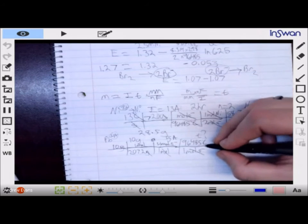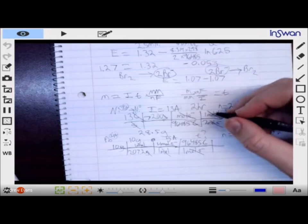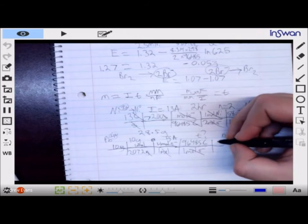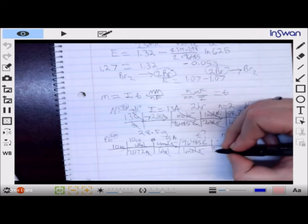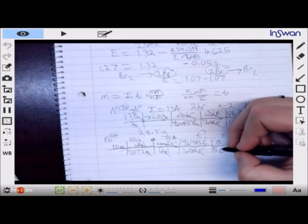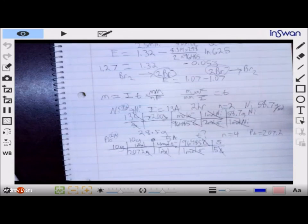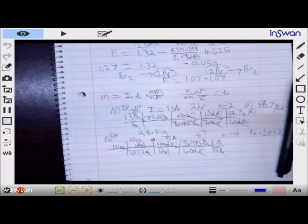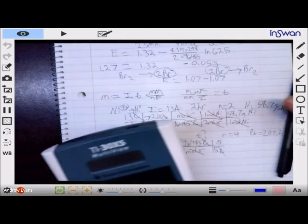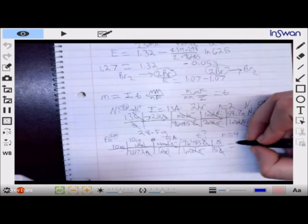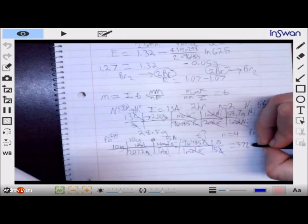And our current, as I said before, was 5 coulombs per second, or 5 amps. So, that will give me a unit of time. So, 10 divided by our molar mass times 4 times 96,485 divided by 5 amps would give us 3,725 seconds.